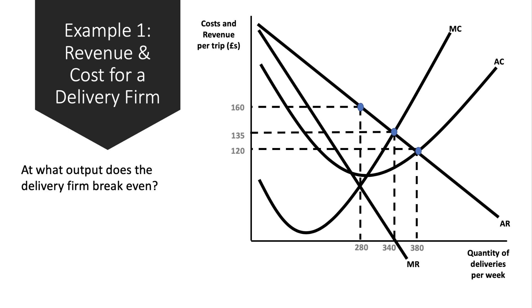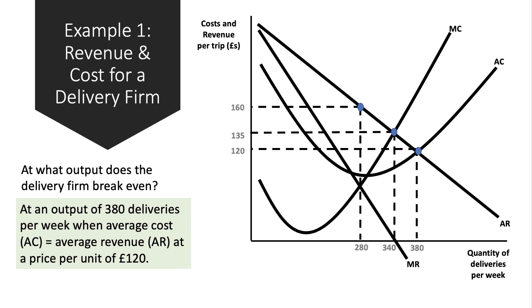Here's a quick question: at what output level does the delivery firm break even? You break even when you cover your costs at an output level of 380 deliveries per week. The average cost equals the average revenue at a price of £120 per unit.